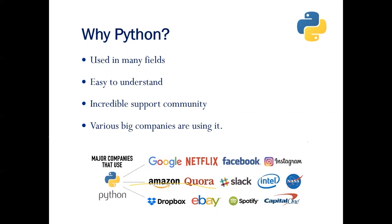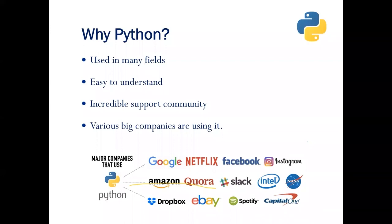C# is used by many companies for building software, but it also has its own limitations. Python, however, can be used in multiple fields — software development, system applications, scripting, web development, AI, machine learning, and data science. This gives companies an advantage: they can pick one language that works across many sectors without needing different specialized developers. Python is also easy to understand, so beginners can pick it up very easily compared to other languages.